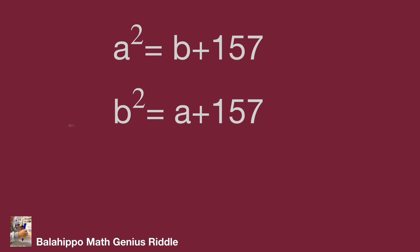Therefore, subtract equation 2 from equation 1. Eliminate 157. We get a squared minus b squared equal to a minus b.